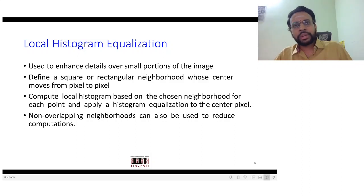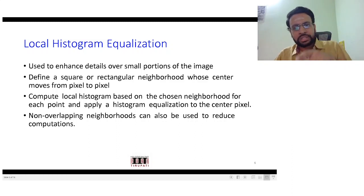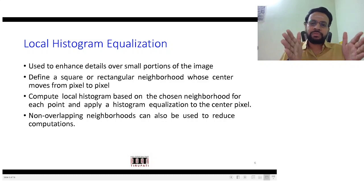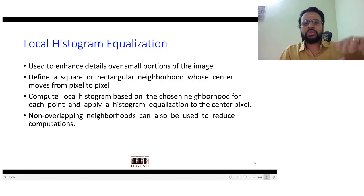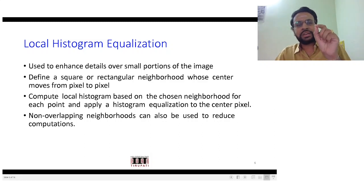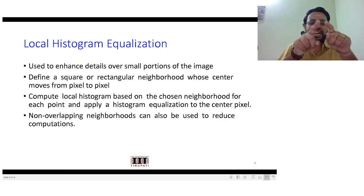This is exactly the objective of local histogram equalization. There are different ways it is implemented. One way — which you will implement in your assignment — is that for each pixel you take a window of size w by w, and for that neighborhood you find a histogram and do histogram equalization. You then look at the intensity of that particular pixel and see where it gets mapped to.